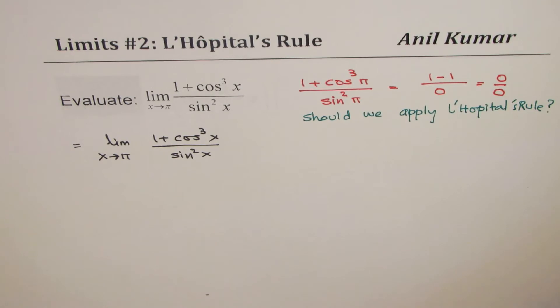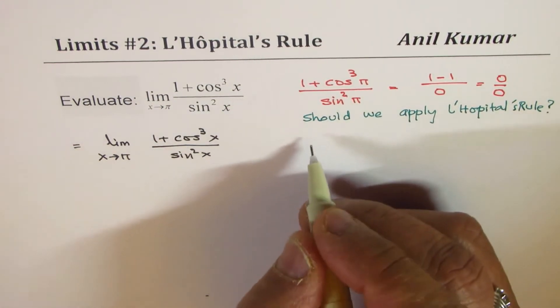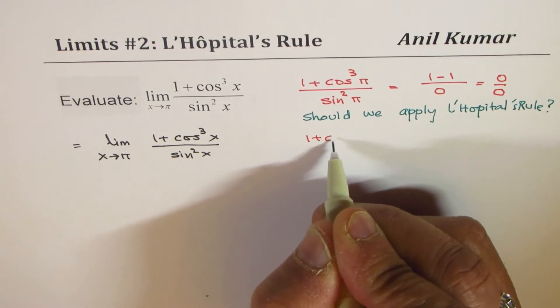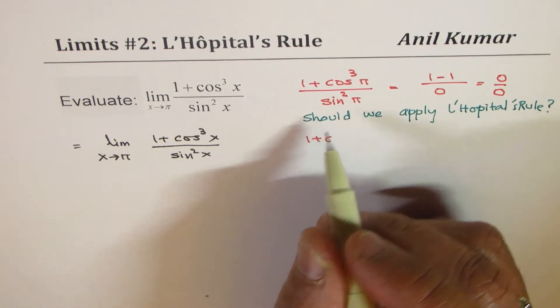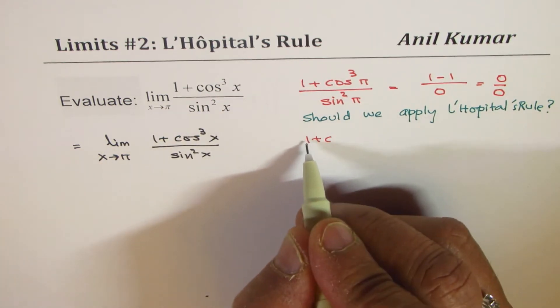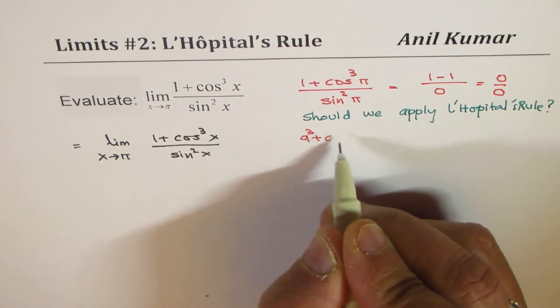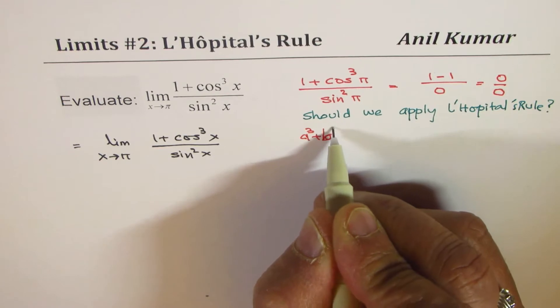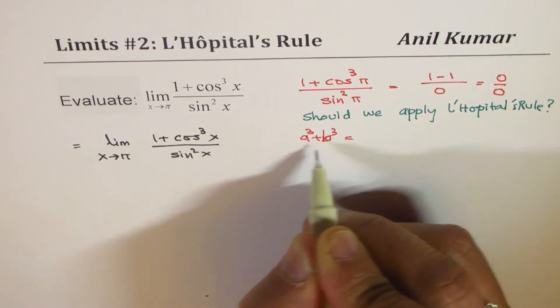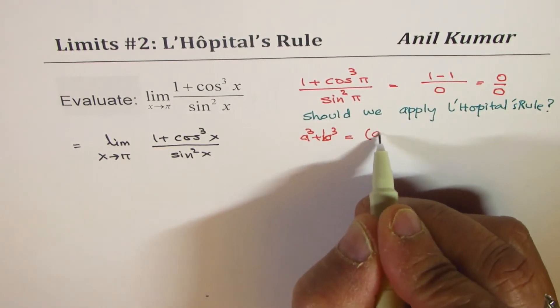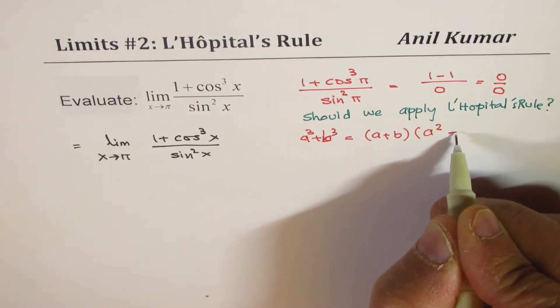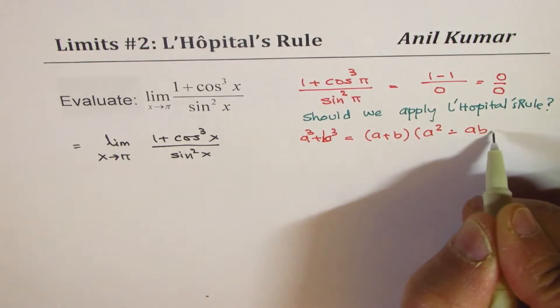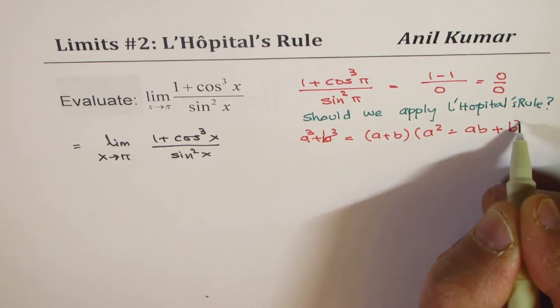What we are going to do here is factor the numerator, 1 + cos³x, using the formula a³ + b³. So a³ + b³ can be written as (a + b)(a² - ab + b²), correct?